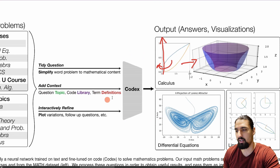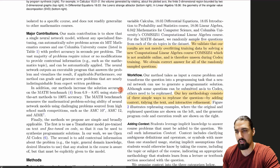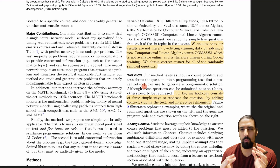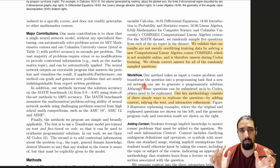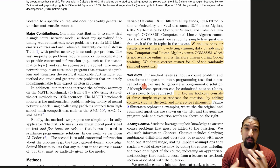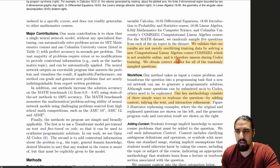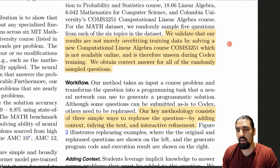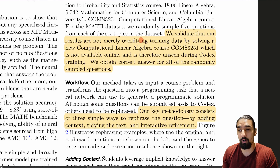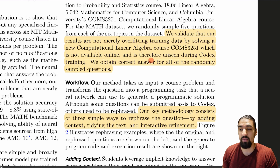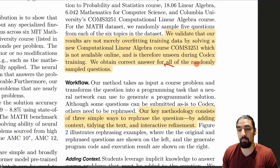Here are some examples: Codex generated Python code that produced plots and solved a problem about the volume of a 3D solid of revolution. They threw every single question at Codex and it managed to solve them after some prompt hacking. To address concerns about overfitting, they validated on a new computational linear algebra course not available online and therefore unseen during Codex training — and got correct answers for all randomly sampled questions.